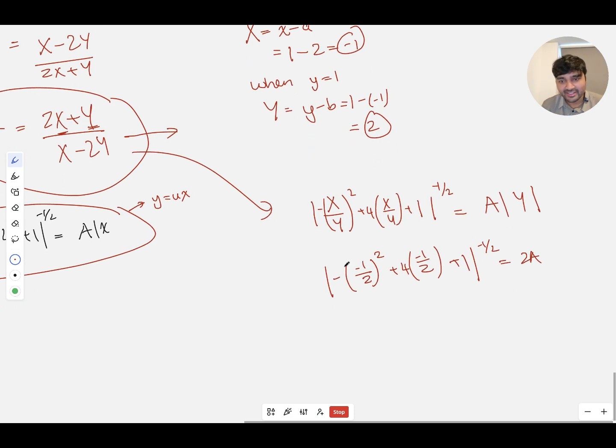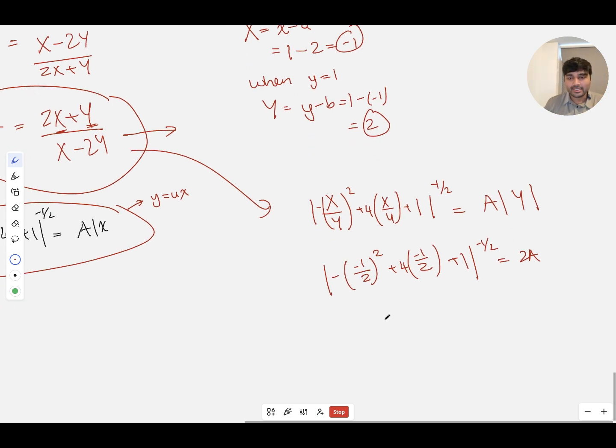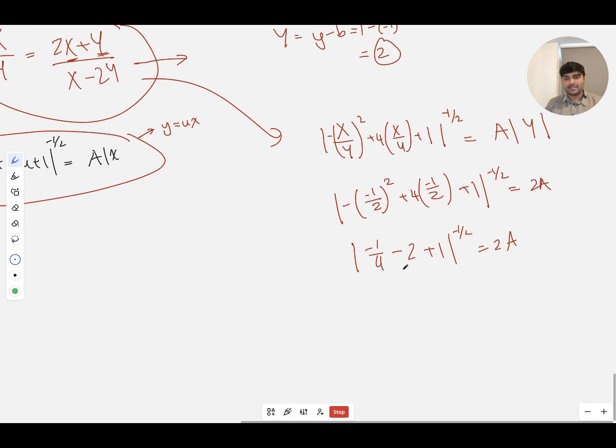Wonderful. Now it's just about simplifying this. So here we've got -¼ + 4 times -½, that's going to be -2 + 1 to the -½ equals 2a. And so here we've got -9/4 + 1, so -5/4. And normally that doesn't look like it simplifies nicely. Equals 2a. So (5/4)^(-½) is going to be 2/√5 equals 2a. And so a is 1/√5.